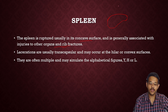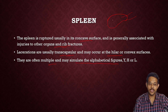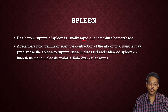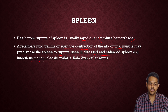Since the spleen is covered above by the ribs, rib fractures may also cause lacerations of the spleen. Lacerations are usually transcapsular and may occur at the hilar, lower, or convex surfaces. They are often multiple and may simulate alphabetic figures like Y, H, and L. Sometimes, small ruptures may coalesce and combine, forming larger lacerations like H or L shaped patterns on the spleen. Death from rupture of the spleen is usually rapid due to profuse hemorrhage.